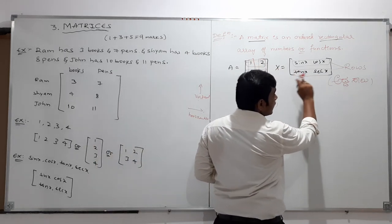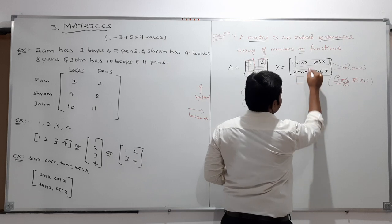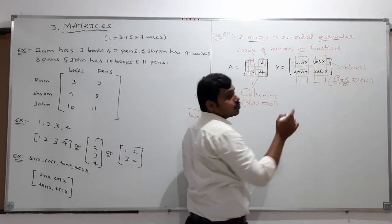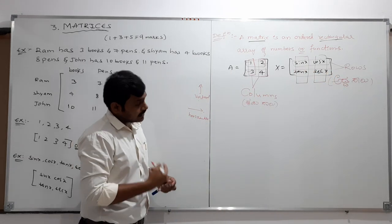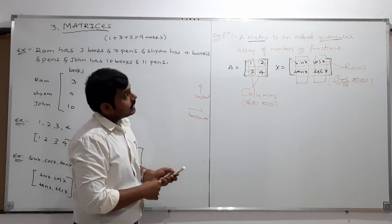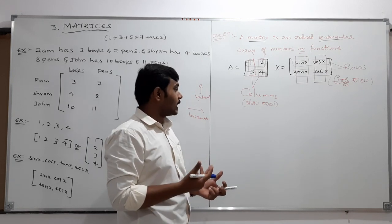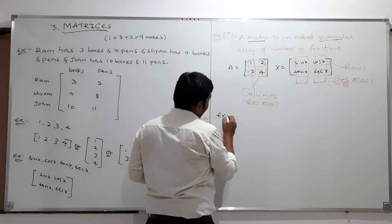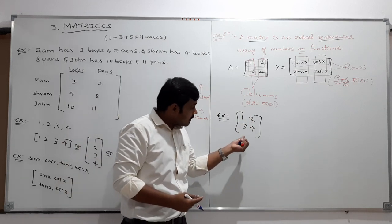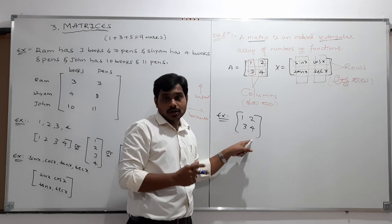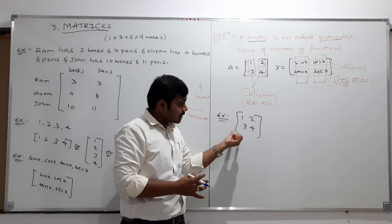Coming to another example: in this case also, how many columns are there? 1, 2 — so 2 columns are there. How many rows are there? 1, 2 — so 2 rows are there. Now, to understand what rectangular array means: for any given arrangement, to conclude whether it is a matrix or not, there is one condition. We should check whether each row has equal number of elements and each column has equal number of elements.